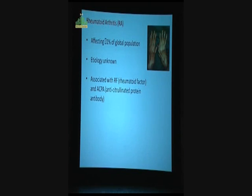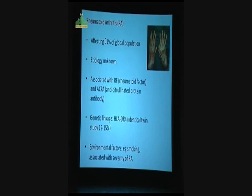Two factors have been known for a long time to be associated with RA. There's rheumatoid factor RF, and also ACPA, which is anti-citrullinated protein antibody. The genetic linkage is really weak. It is linked to HLA-DR4 with an identical twin study about 12 to 15%. It is now deemed that environmental factors such as smoking are associated with the severity of rheumatoid arthritis.